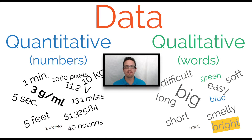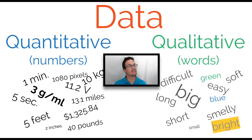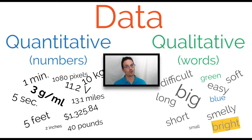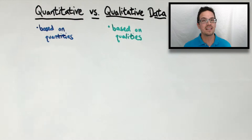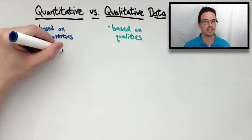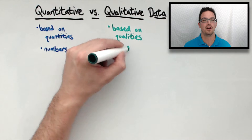This is going to be a video about quantitative and qualitative data. Basically, the difference between the two is that quantitative data is based on quantities while qualitative data is based on qualities. In other words, one is based on numbers and the other one is based on words. Let's get a little bit deeper in the understanding of the two.